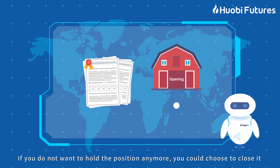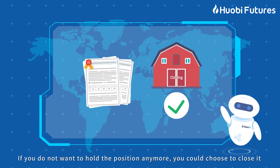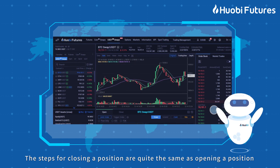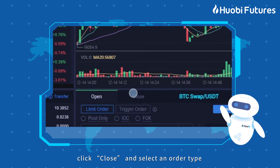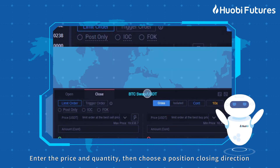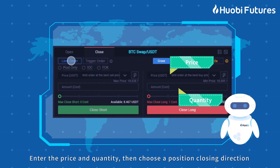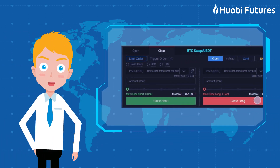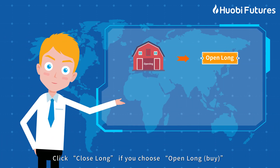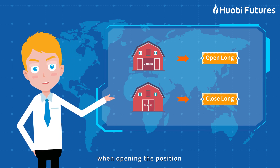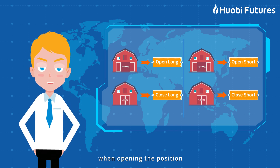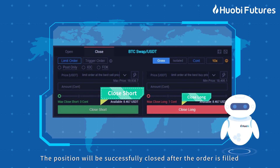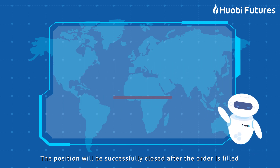If you do not want to hold the position anymore, you can choose to close it. The steps for closing a position are quite the same as opening a position. Select a position you would like to close, click Close, and select an order type. Enter the price and quantity, then choose a position closing direction. Click Close Long if you chose Open Long Buy when opening the position, or Click Close Short if you chose Open Short Sale. The position will be successfully closed after the order is filled.